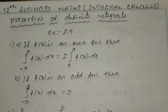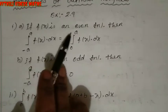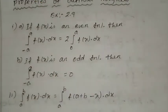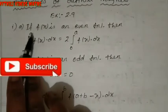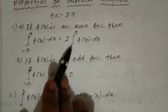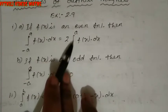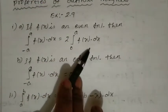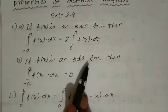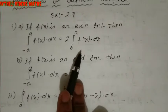We are going to do the 2.9 exercise. The first property: if f(x) is an even function, we have to use the formula — the integration of minus a to plus a of f(x) dx equals 2 times the integral from 0 to a of f(x) dx. For the second property, if f(x) is an odd function, instead of plus we use the odd function result.